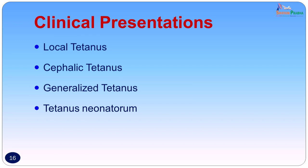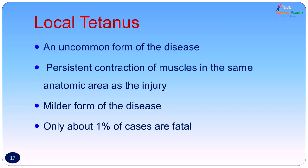The clinical presentation may vary. Tetanus can present as local tetanus — the mildest form — cephalic tetanus, generalized tetanus, or tetanus neonatorum. Local tetanus is an uncommon form: persistent contraction of muscles in the same anatomic area as the injury is seen. It is the mildest form; only about 1% of cases are fatal, and our patient responded well to treatment and was sent home.